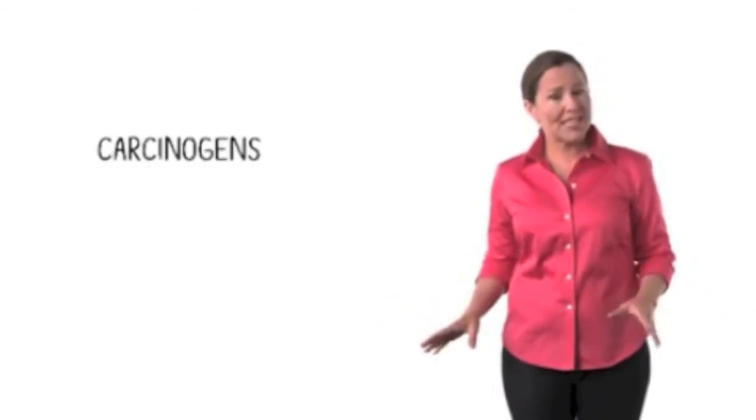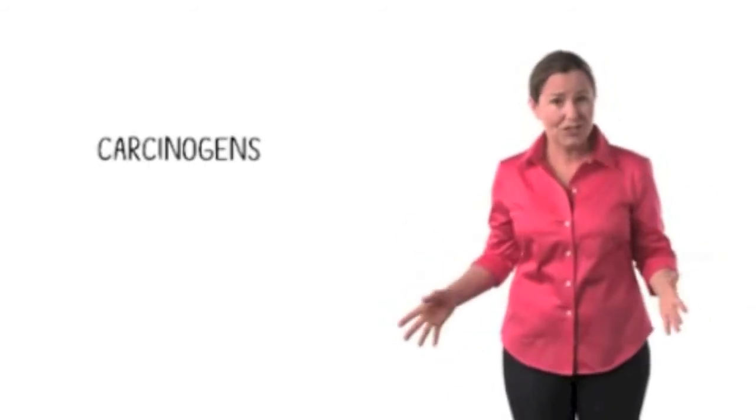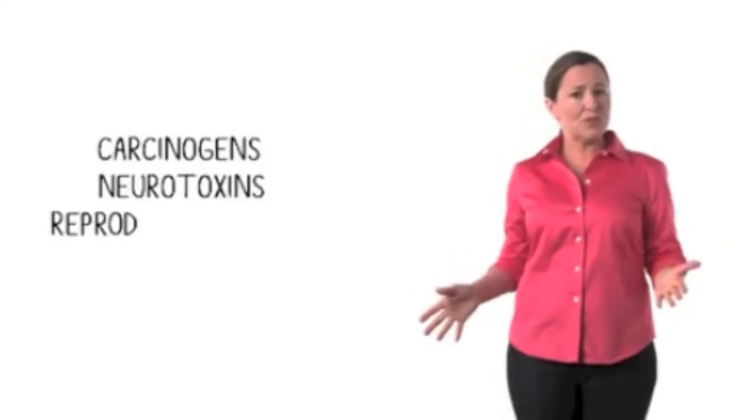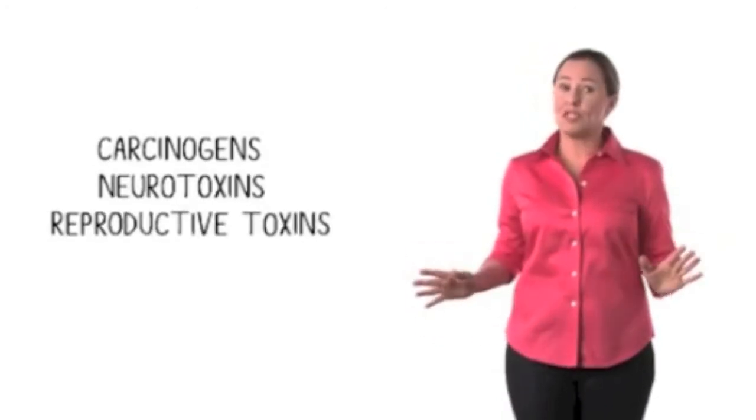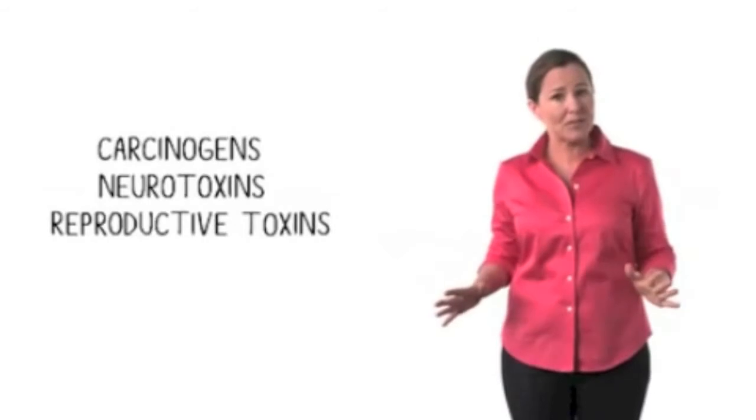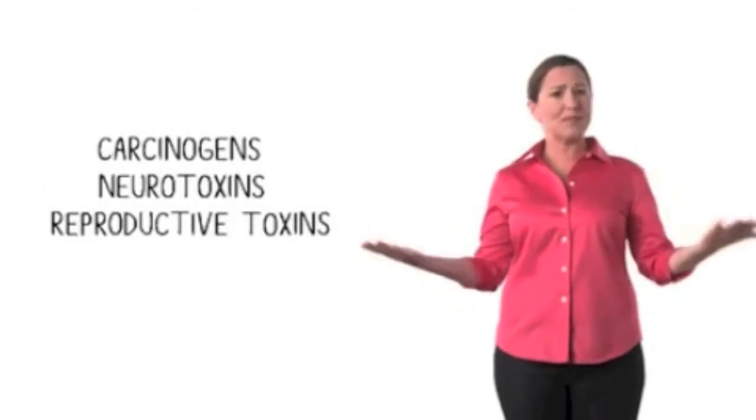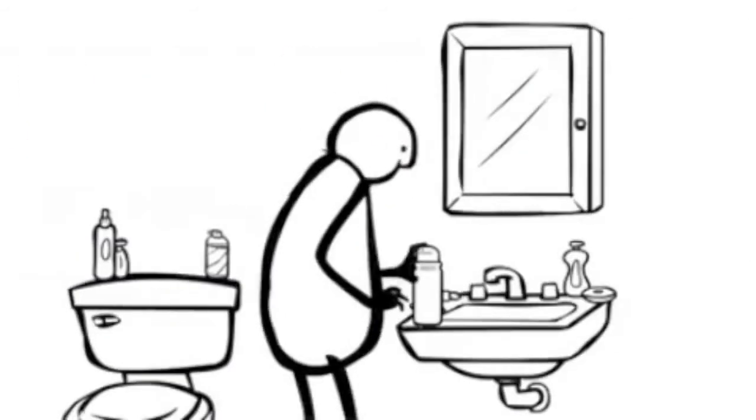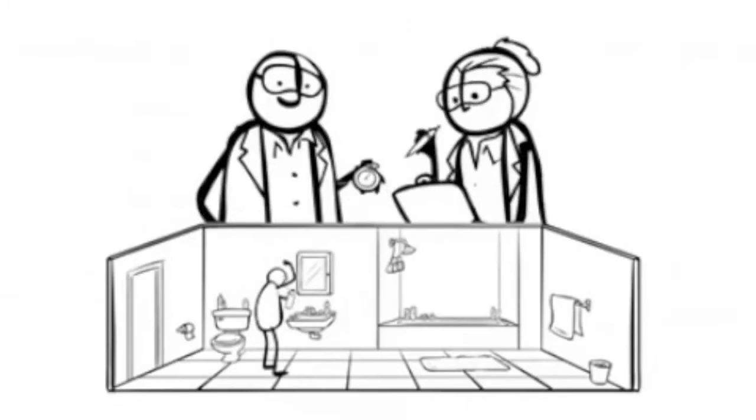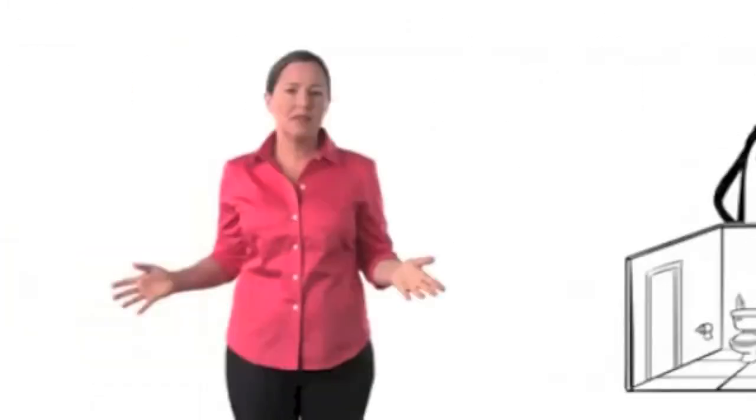Some are carcinogens. That means that they can cause cancer. Others are neurotoxins and reproductive toxins, proven to mess up brain development and reproduction in animals. Wait a minute. We're animals, too. It's like a giant experiment. We're using all these mystery chemicals and just waiting to see what happens. One thing we do know is that they're getting inside us.